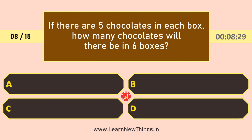If there are 5 chocolates in each box, how many chocolates will there be in 6 boxes? The answer is 30.